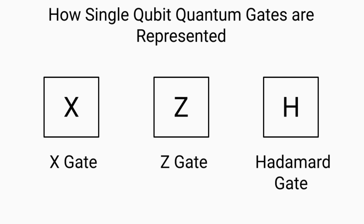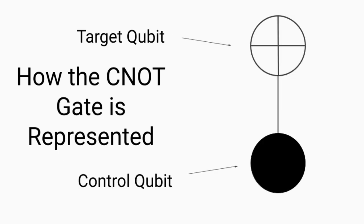And finally, we have the Hadamard gate, which, like the two gates before, is simply a box with an H in the middle of the box. So we can see that our single-qubit quantum gates are represented quite simply in quantum circuits.